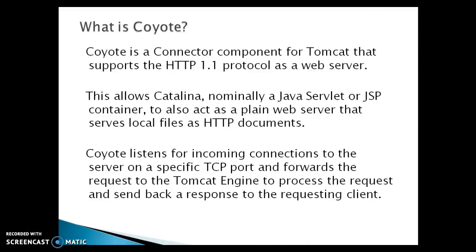Something called Coyote — Coyote is a connector component for Tomcat that supports the HTTP 1.1 protocol as a web server. This allows Catalina, normally a Java servlet or JSP container, to also act as a plain web server that serves local files as HTTP documents. Coyote listens for incoming connections to the server on a specific TCP port and forwards the request to the Tomcat engine to process the request and send back the response to the requesting client.